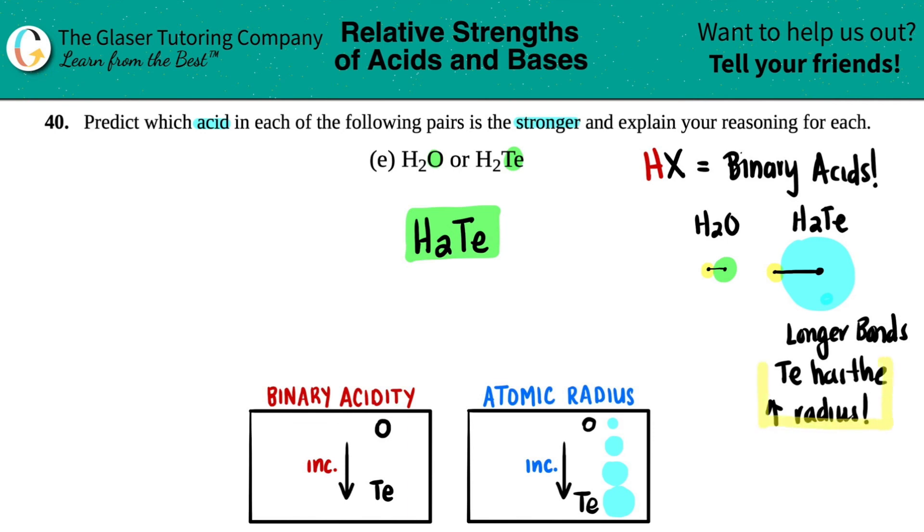And that is basically the explanation. So smaller the radius, closer the bonds, the harder it is for the hydrogen to be donated. But the bigger you are, the more further out those hydrogens are. The hydrogen's like, 'Yeah, I can leave.' And that's exactly what acids do.